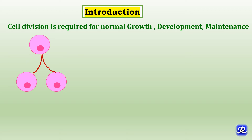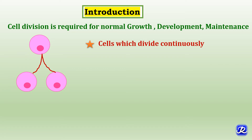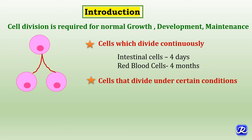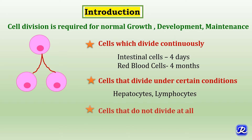Cell cycle, or cell division cycle, refers to the cyclic occurrence of a series of events leading to cell division to produce two daughter cells. Cell division is required for normal growth, development, and maintenance. There are cells which divide continuously, like intestinal cells and red blood cells; some cells divide under certain conditions, like hepatocytes and lymphocytes; and some cells do not divide at all, like cardiac muscle cells and nerve cells.